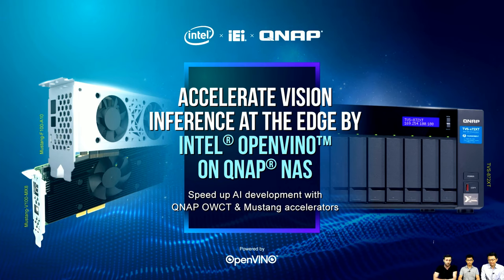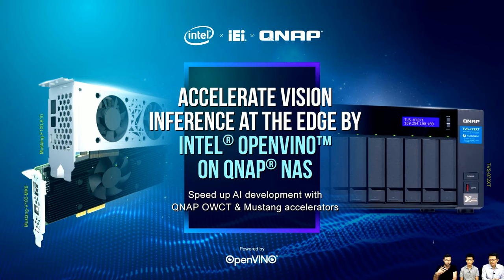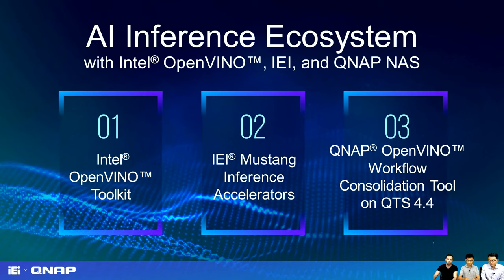To understand inference for the layman: it's a component of a system that applies logical rules on a knowledge base to deduce information, enabling human vision. Today's agenda has three parts: first, Sherman from Intel will talk about the Intel OpenVINO toolkit; second, we'll cover the IEI Mustang inference accelerators; and third, Kevin will join us to discuss the QNAP OpenVINO workflow consolidation tool on QTS 4.4.